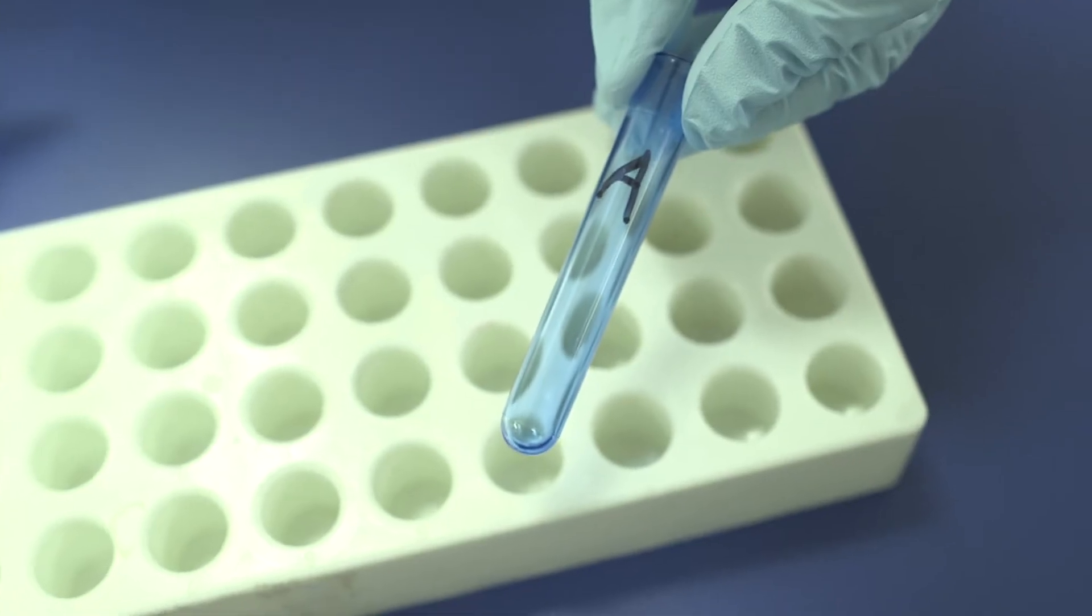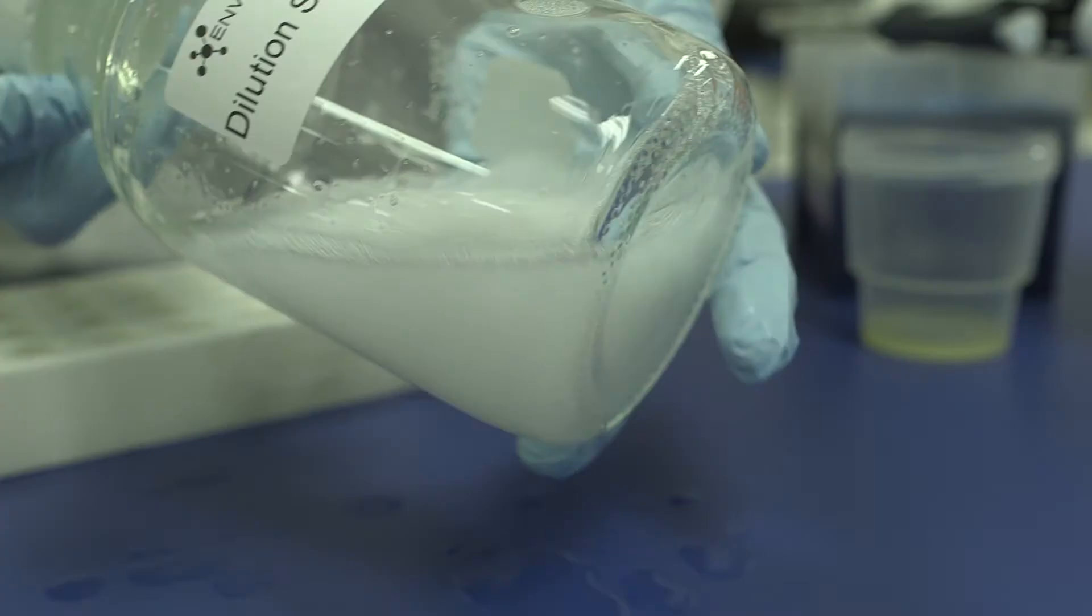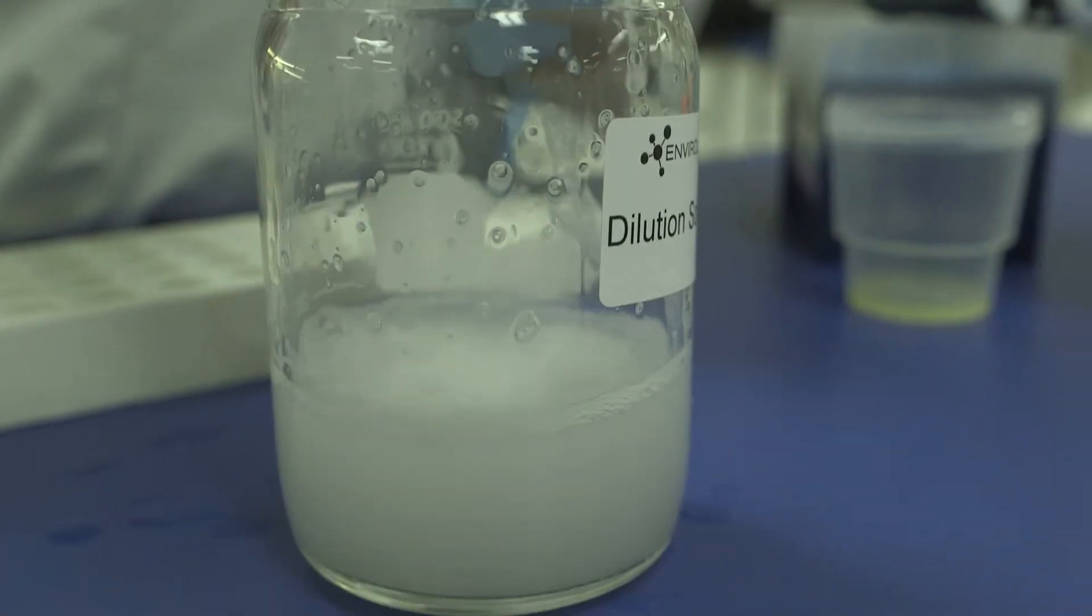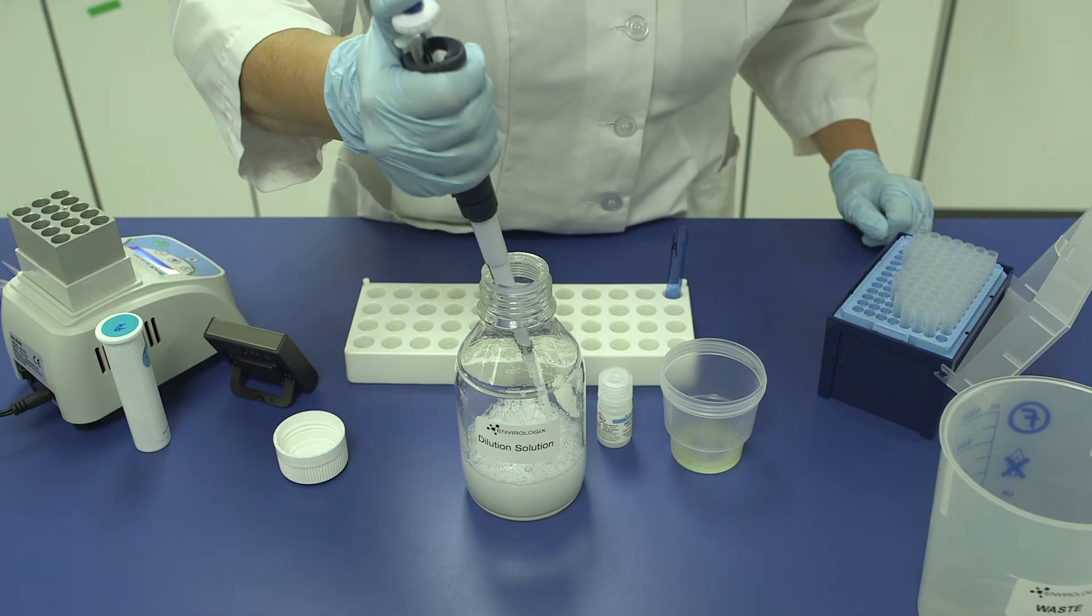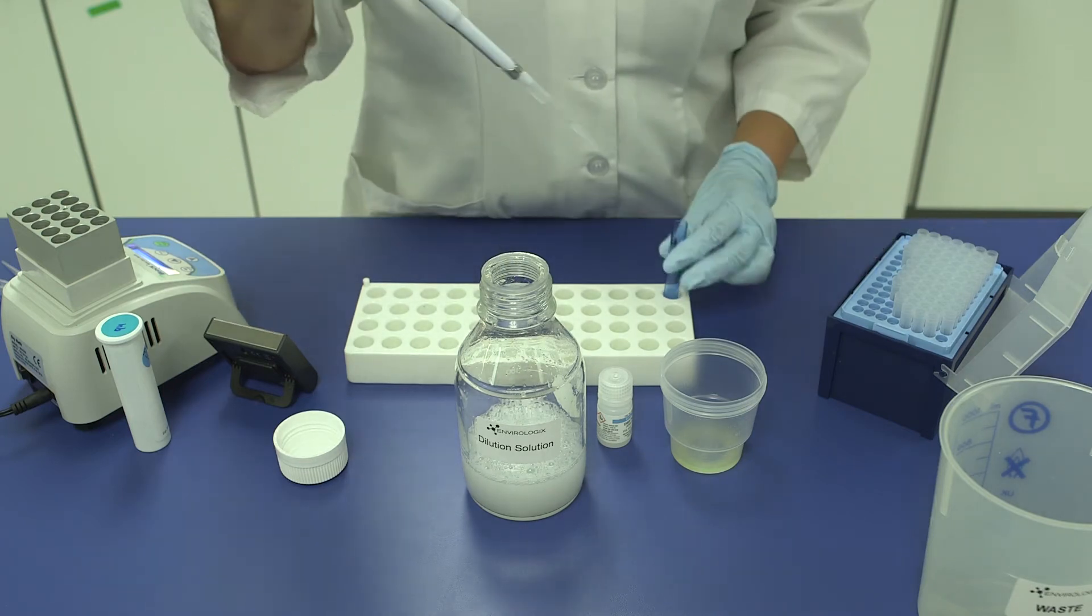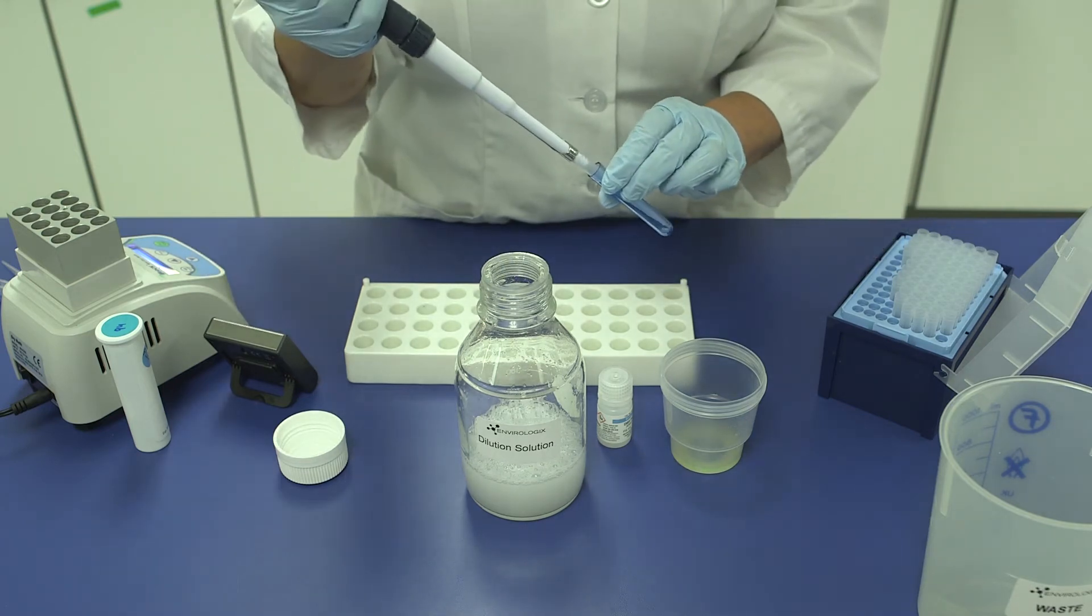Dilution A, Step 1. Add 400 microliters of well-mixed dilution solution and 100 microliters of clarified extract to a clean tube. Mix well.